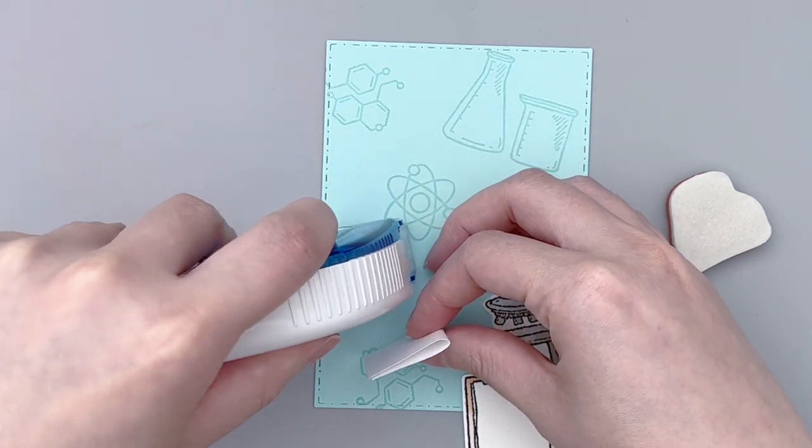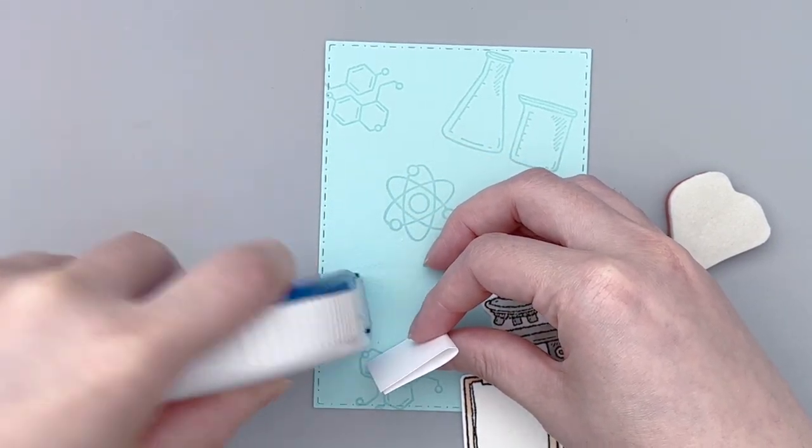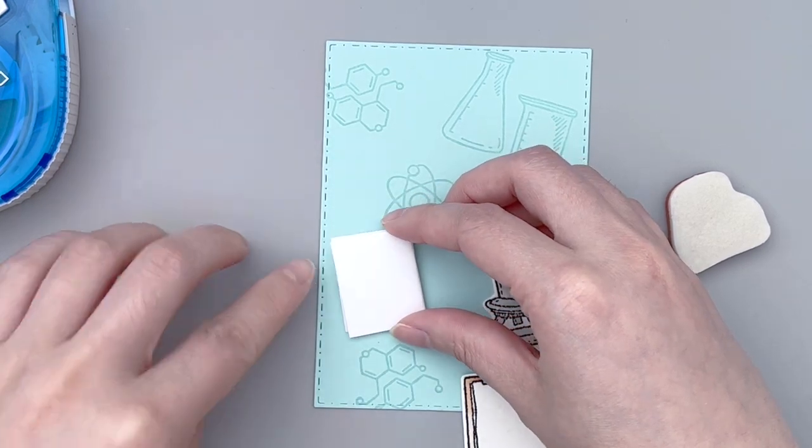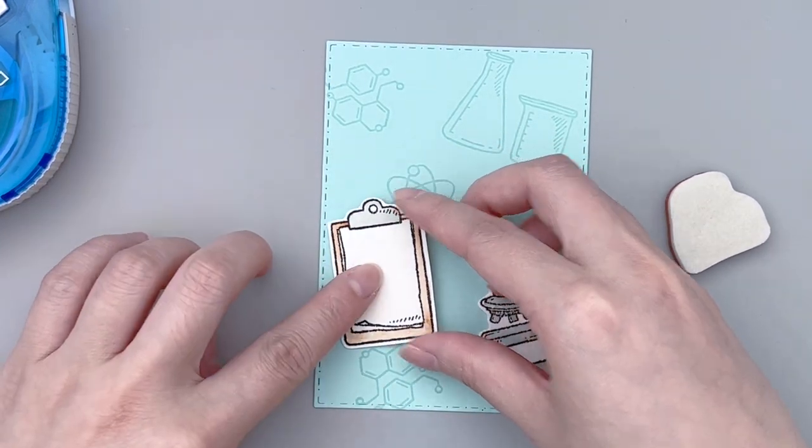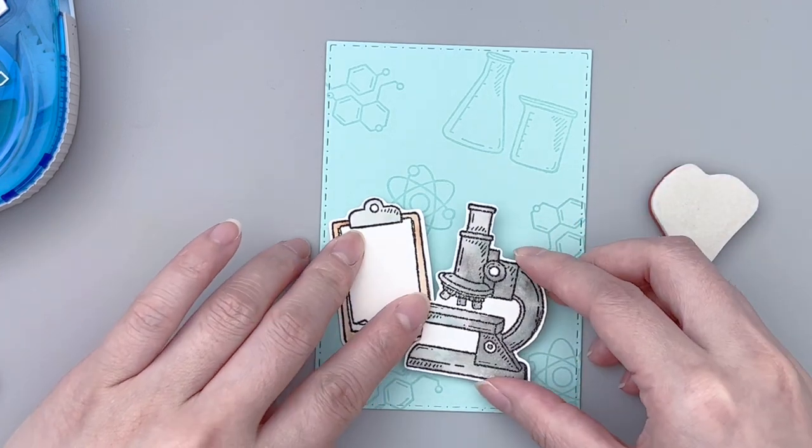First, we will create the battery holder which is just small enough to be covered by the clipboard image. I adhered it with my tape runner and made sure the flap opening is facing towards the left.